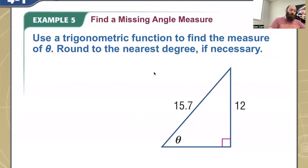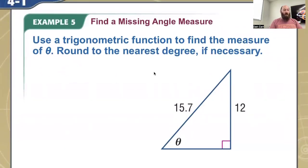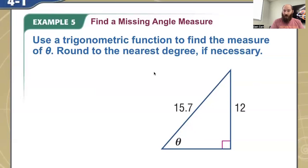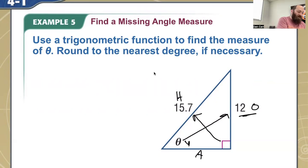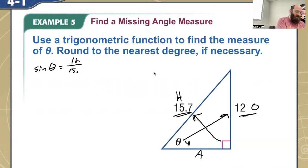So we look at our first example here. Use a trigonometric function to find the measure of theta, round to the nearest degree if necessary. You're going to set these up just like you would for normal right triangle trigonometry. Based on my angle theta, I'm going to label my sides as opposite, hypotenuse, and adjacent. I always like to start with hypotenuse. From my theta, this is opposite and this is adjacent. Which ratio is going to use my opposite and hypotenuse? Those are the two things that I know, so that's going to be sine. I'm going to set this up as the sine of theta is equal to the ratio of 12 divided by 15.7.